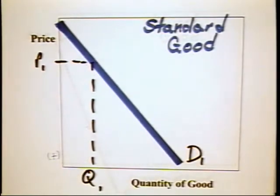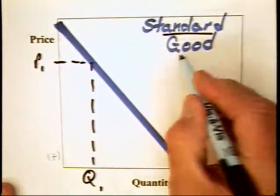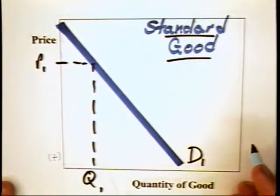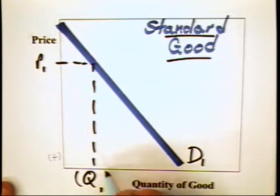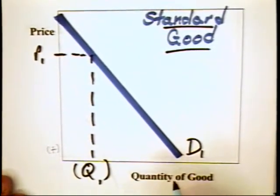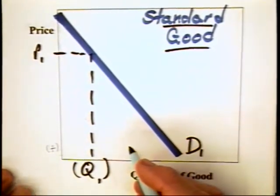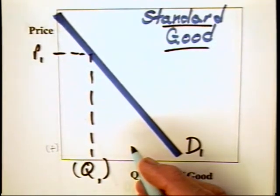Now, the network good stands in sharp contrast with the demand for a standard good that is considered in microeconomics everywhere. As we have discussed in here, the demand for a standard good, say a candy bar, is one in which the quantity that's actually demanded in the marketplace is unaffected by how many other people are consuming the particular candy bar.